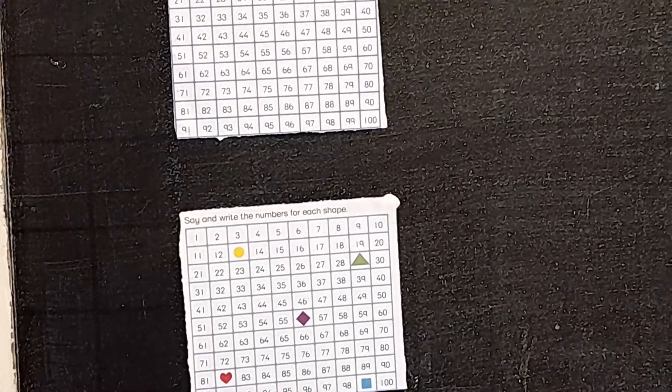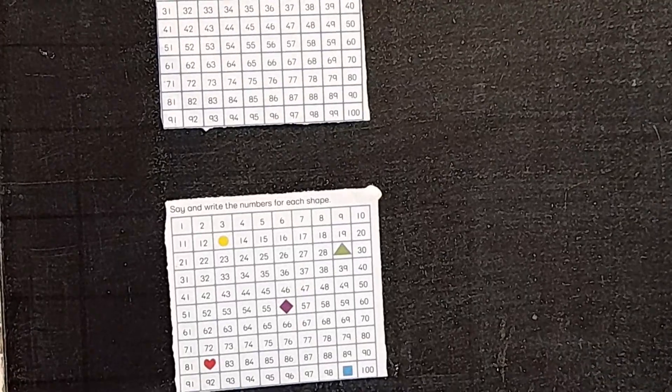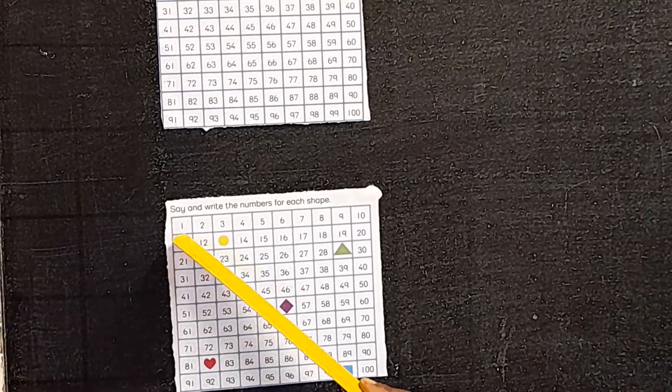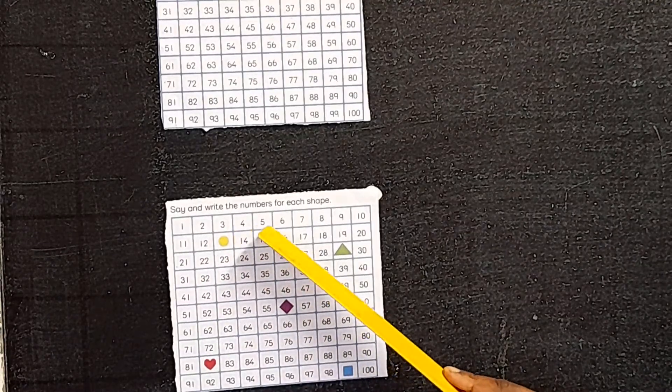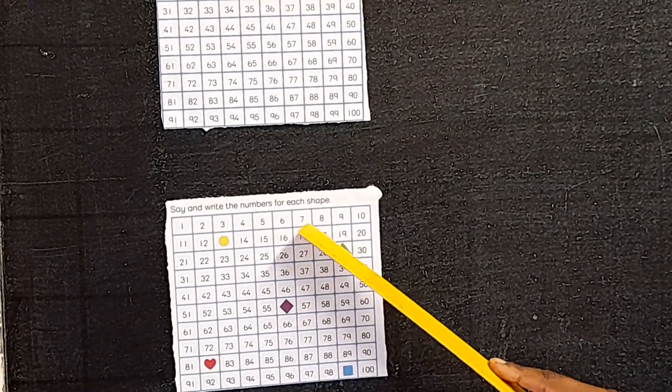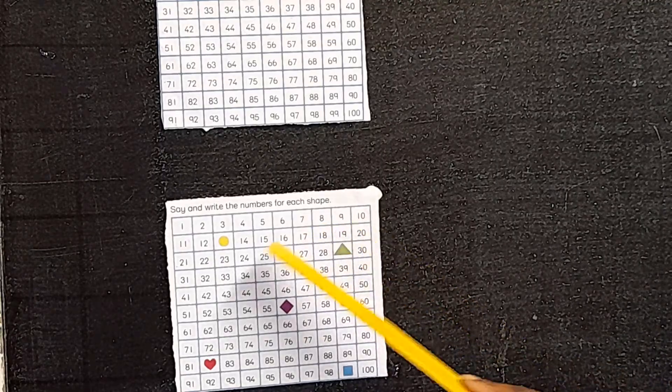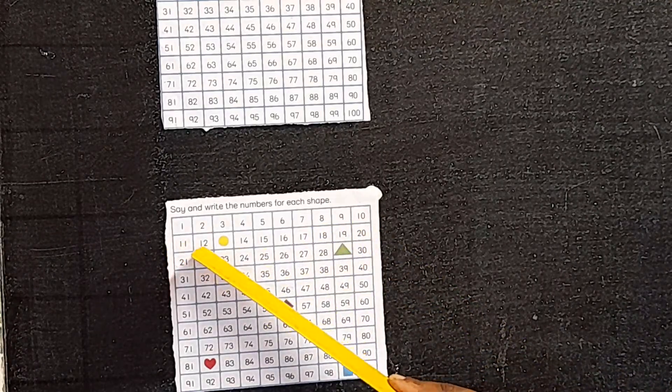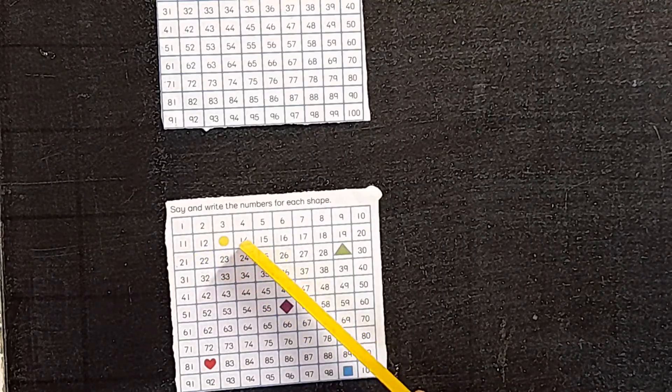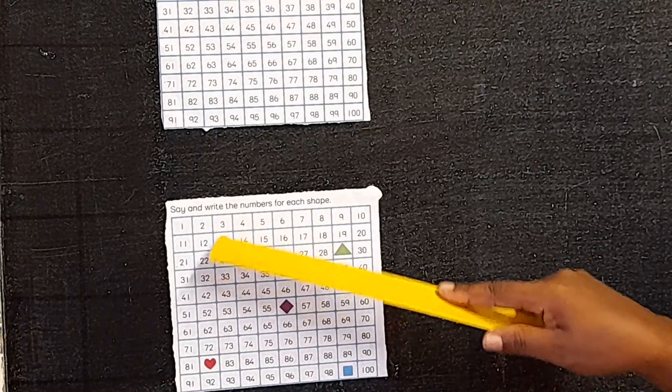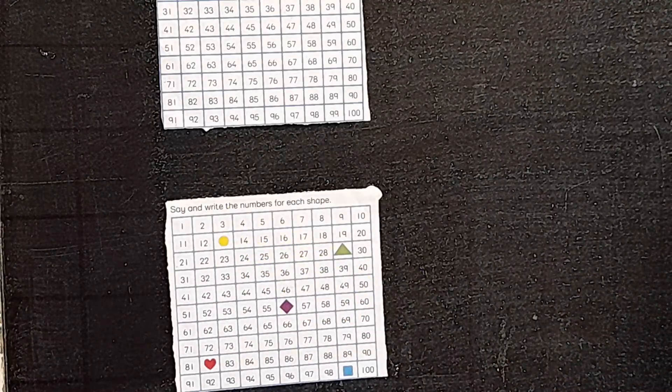For you to get the missing numbers you have to count. Let's go together: 1, 2, 3, 4, 5, 6, 7, 8, 9, 10, 11, 12, then there is a circle. What is the number here?